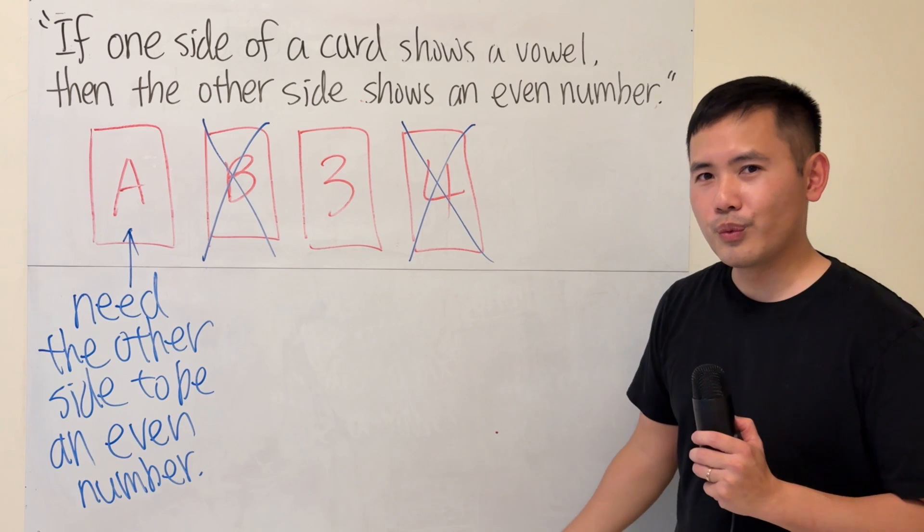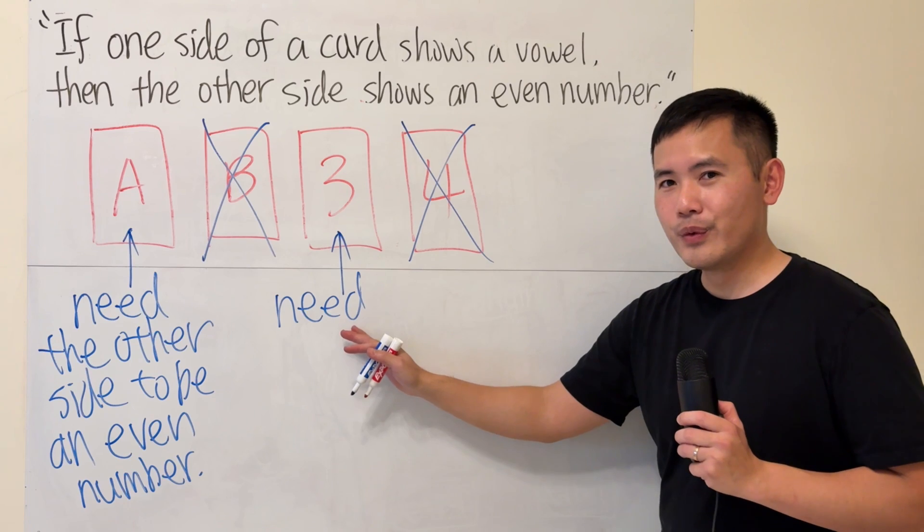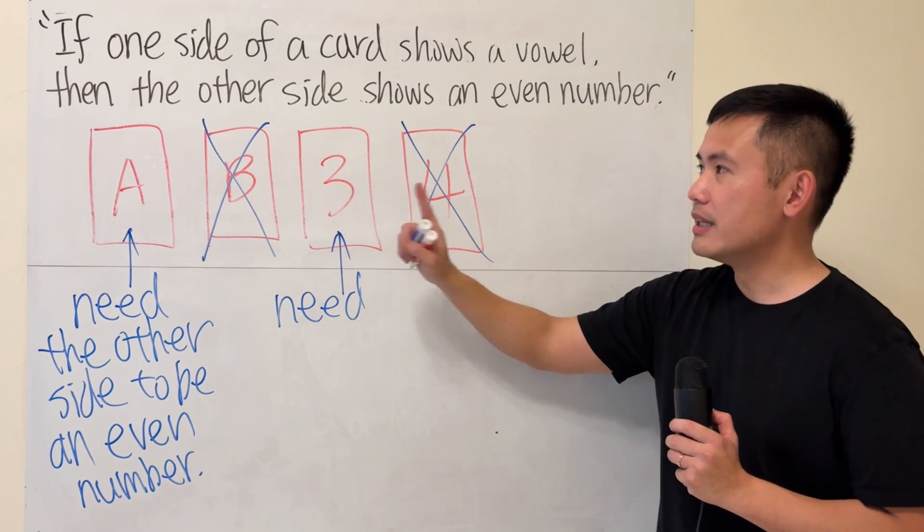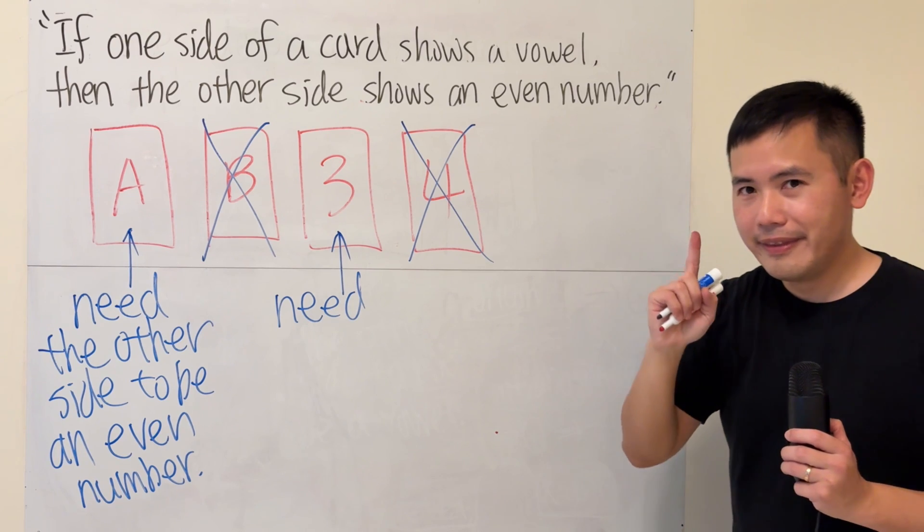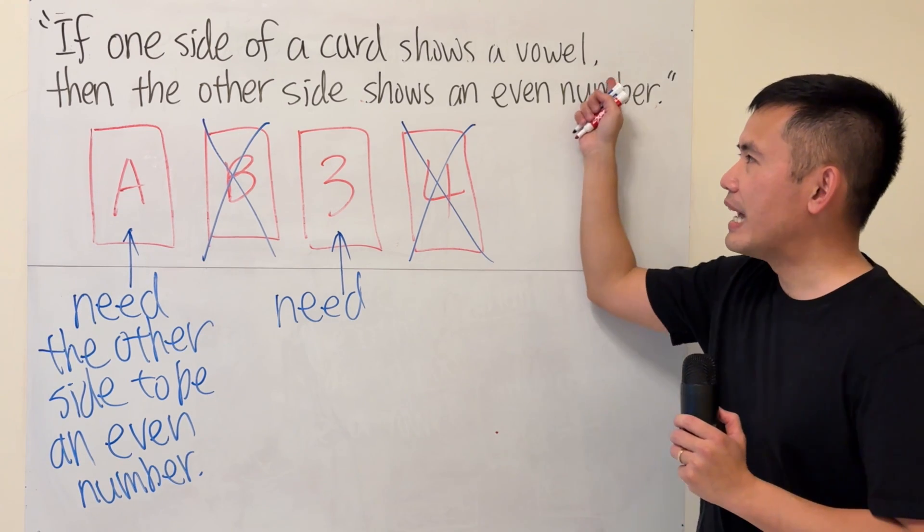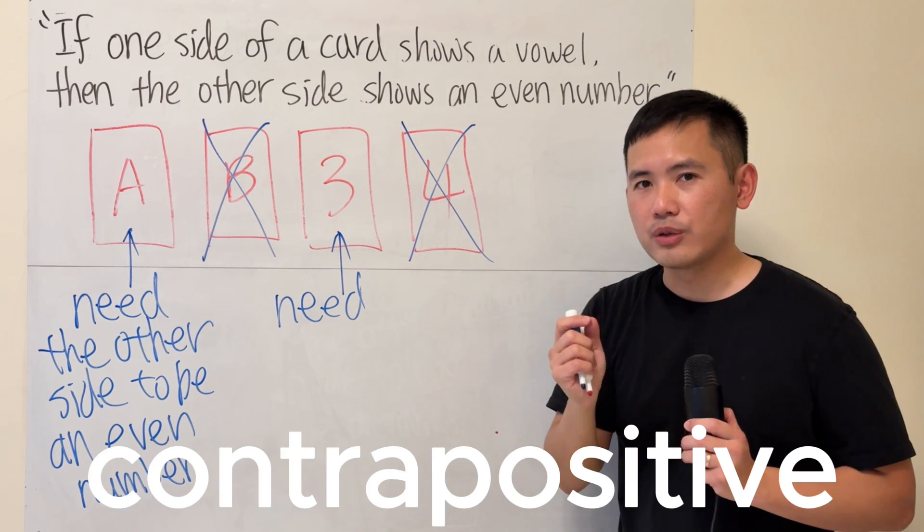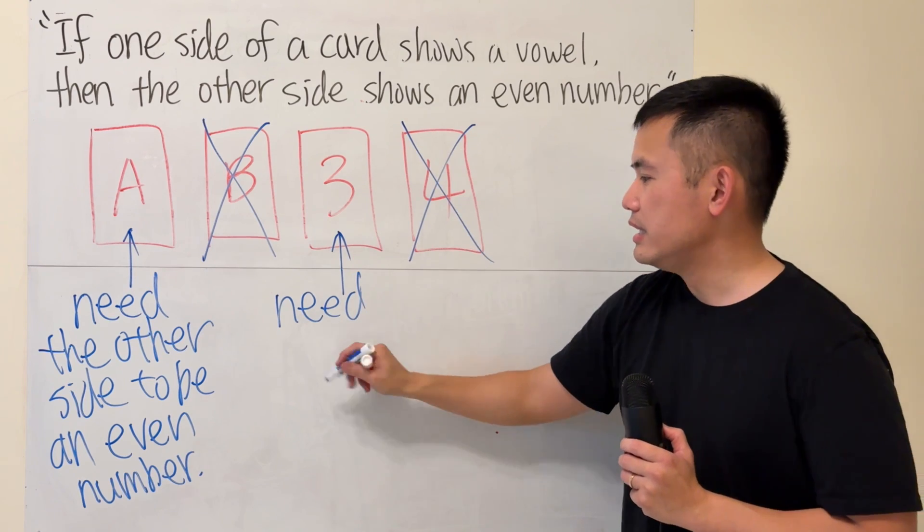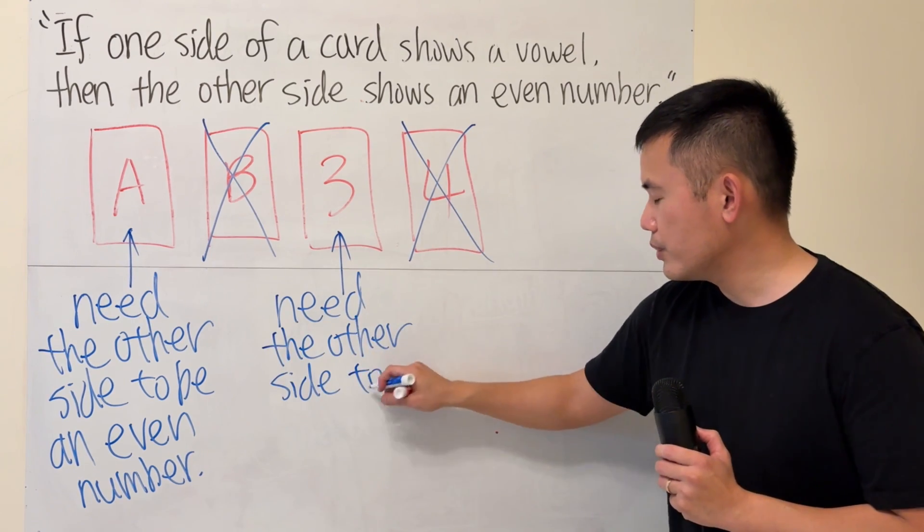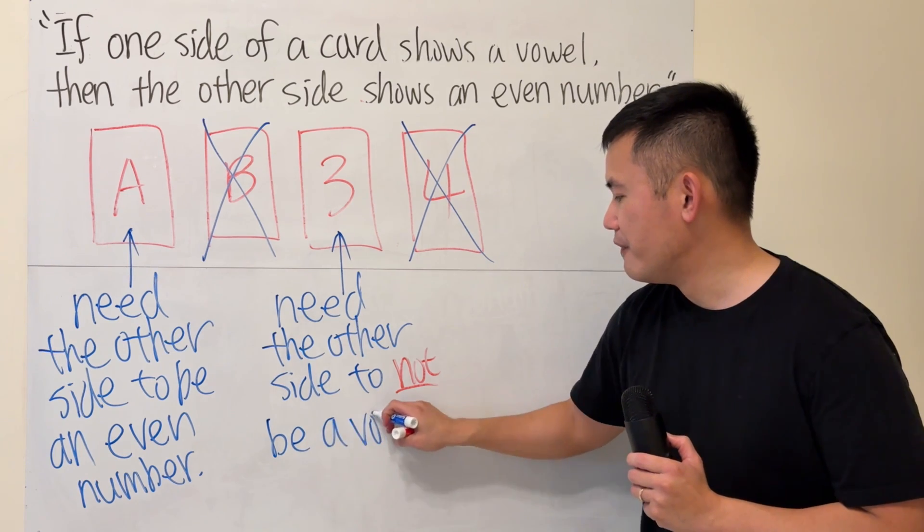Okay, three is an odd number, so what do we do with that? Well, in fact, this right here, we have to check it. Why though? Well, the truth is, three is odd. So that means it does not satisfy this conclusion. That means we better not have the condition. And this is the idea of the contrapositive. So we will have to flip this card to the other side and check the other side to not be a vowel.